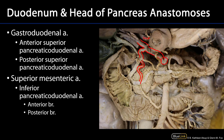Here is the superior mesenteric artery, or SMA, running just posterior to what would be the neck of the pancreas. Coming off of the SMA is a branch called the inferior pancreaticoduodenal artery, and it is going to give rise to an anterior branch and a posterior branch. The anterior branch is going to anastomose with the anterior superior pancreaticoduodenal artery, and that posterior branch is also going to anastomose with the posterior superior pancreaticoduodenal artery.